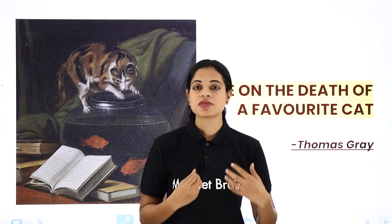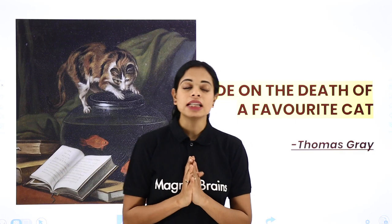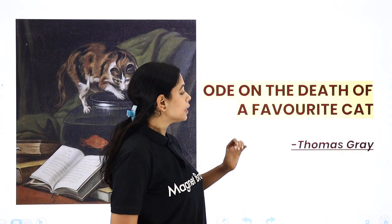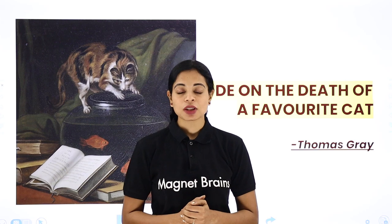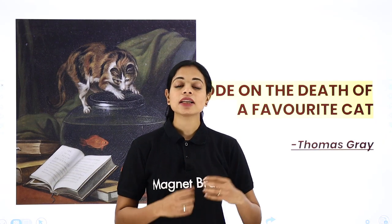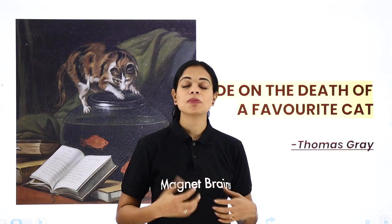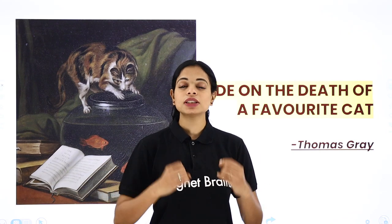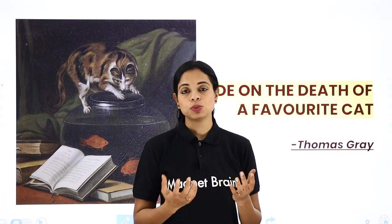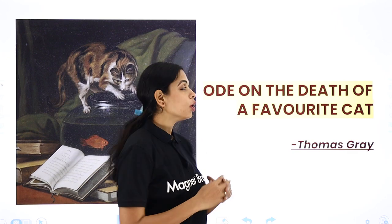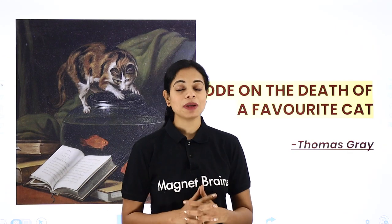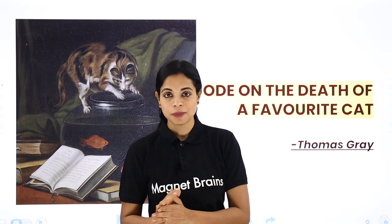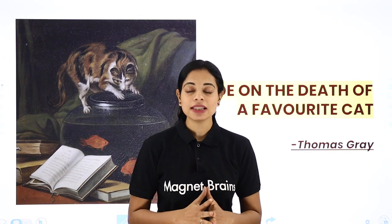What is an Ode? The title of the poem is 'Ode on the Death of a Favourite Cat.' Ode ka matlab hota hai — it's like a poem which was meant to be sung. It's written in such a rhyming pattern that it was actually meant to be sung. This poem is based on a real situation.